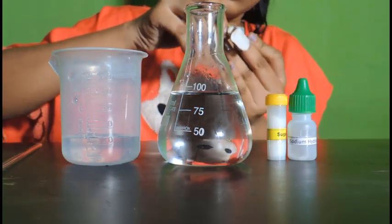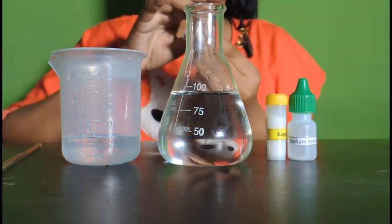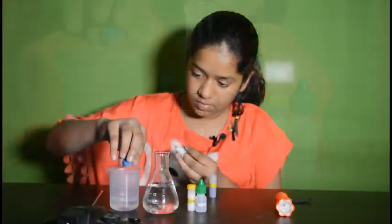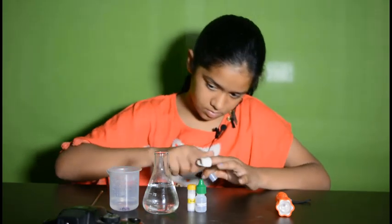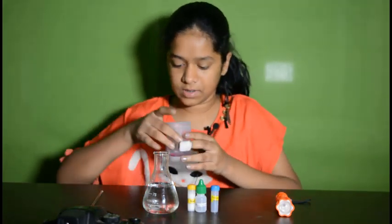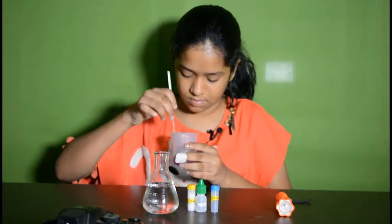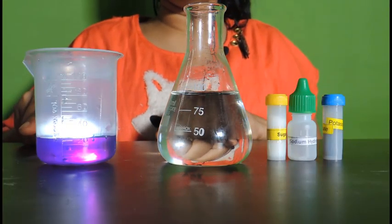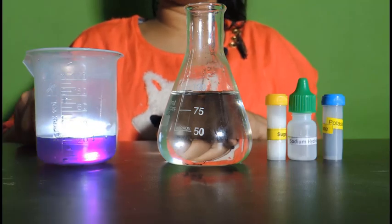Let's begin with adding potassium permanganate into 20 ml of water. Add less amount of potassium permanganate, so I am adding 2-3 crystals. Now let's stir it well. Now the solution is in violet color because of the presence of permanganate ions with oxidation state plus 7.